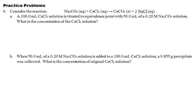Now there were some practice problems at the end that we didn't really get to look at, so I'd like to take some time right now and give you an idea of how you would have to approach these. So number six — consider this reaction. Sodium carbonate and calcium chloride turns into the precipitate calcium carbonate, and then we're going to have sodium chloride left over in solution. If I had a 100 milliliter calcium chloride solution titrated to the equivalence point, and we had 50 milliliters of 0.2 molar sodium carbonate solution, then we want to know what's the concentration of the calcium chloride.